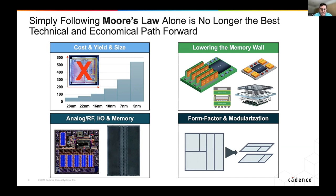On these system-on-chips, we see more and more analog and RF content, more IO for moving signals on and off the chip, and more memory in an effort to break down the memory wall. Those are technologies that historically haven't taken advantage of Moore's Law. Scaling transistors doesn't really apply in the world of analog, RF, and IO — where you want big transistors driving and receiving signals — and even in memory. Because of that, today's heterogeneous integration is heavily based on separating the IO, high-speed SerDes, memory, and analog off the die.